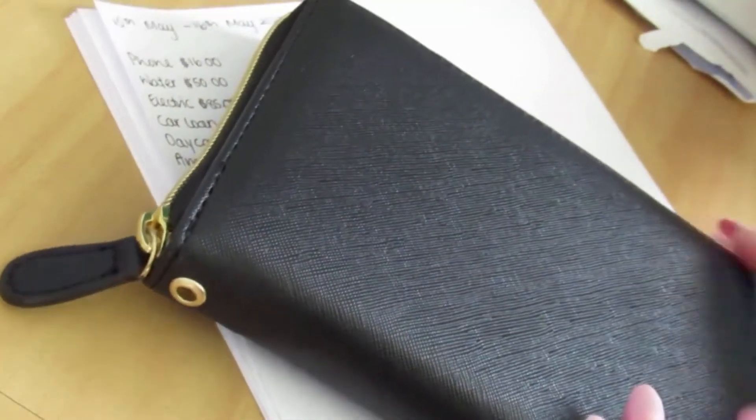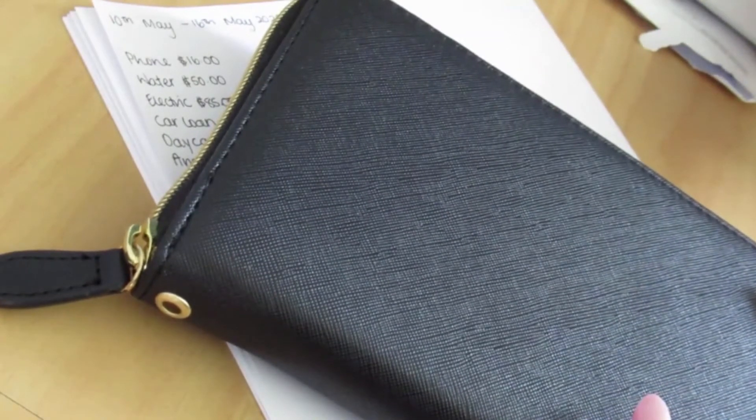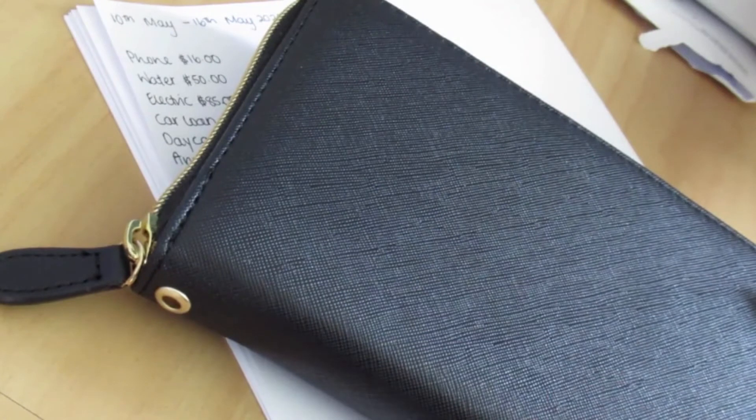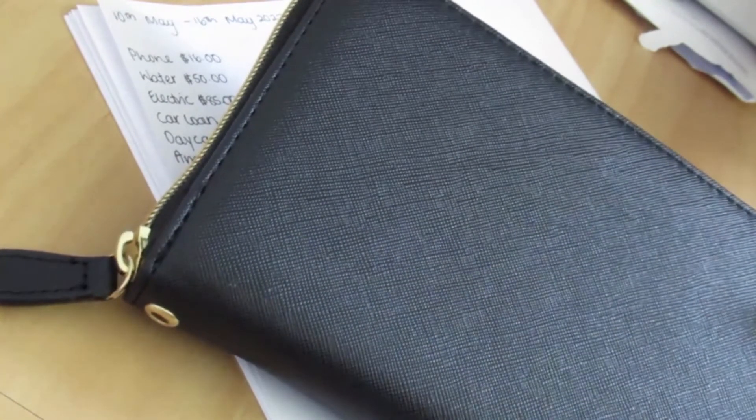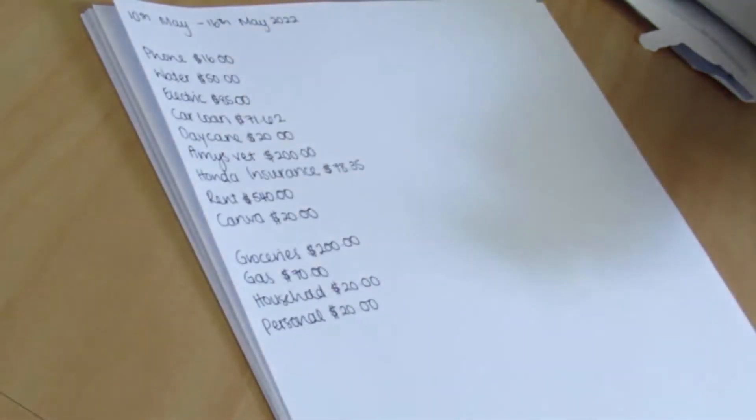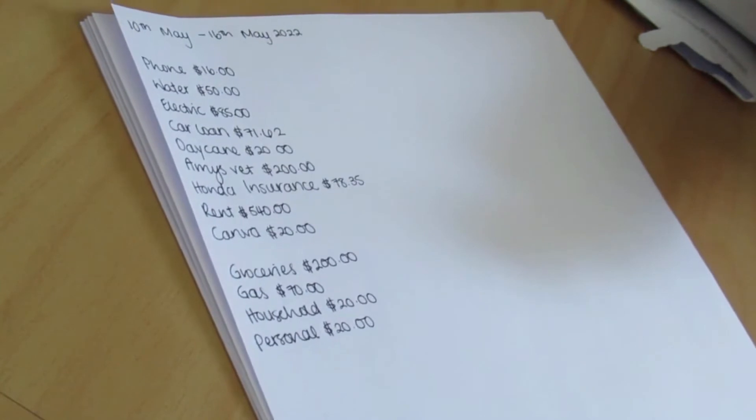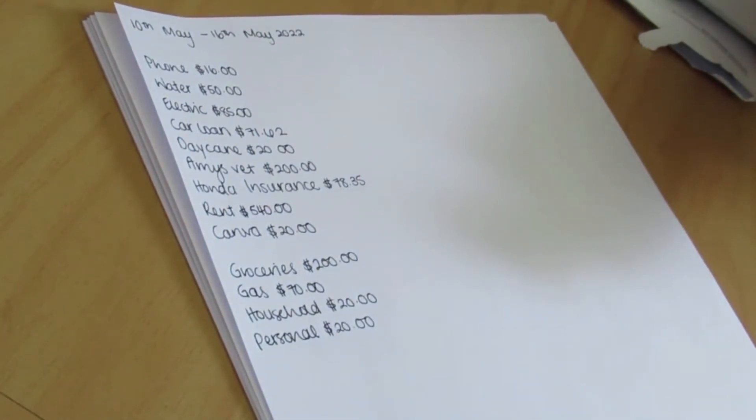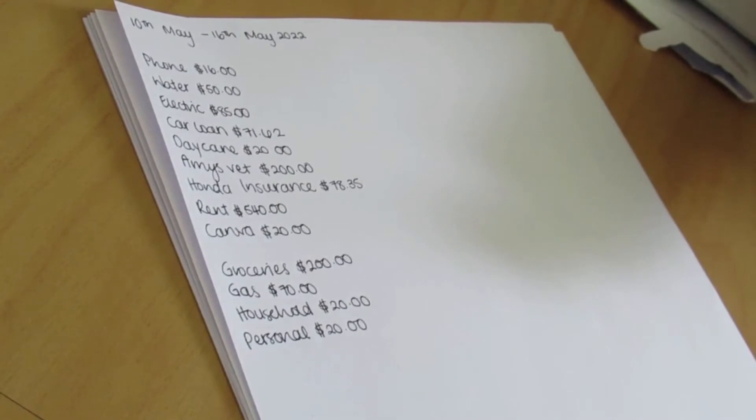I also did just order in a new wallet, so this is what it looks like. It's my cash stuffing wallet. I wanted a plain black wallet, something that I could use every single day, and that's what I got here. I'm not using the Budget Mom Filofax wallet anymore or the Savvy Sense wallet. I wanted something different. I like to switch things up a little bit here and there. That's currently my new wallet. You can find it on Amazon if you just look up cash wallets. It comes with some envelopes that you can reuse.